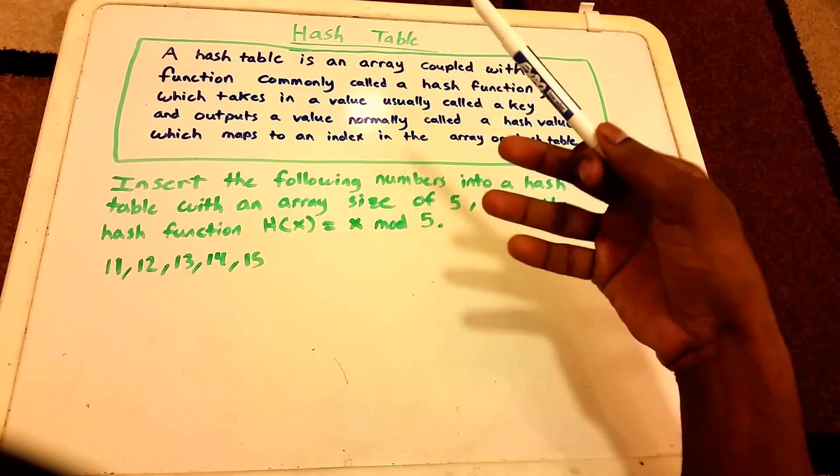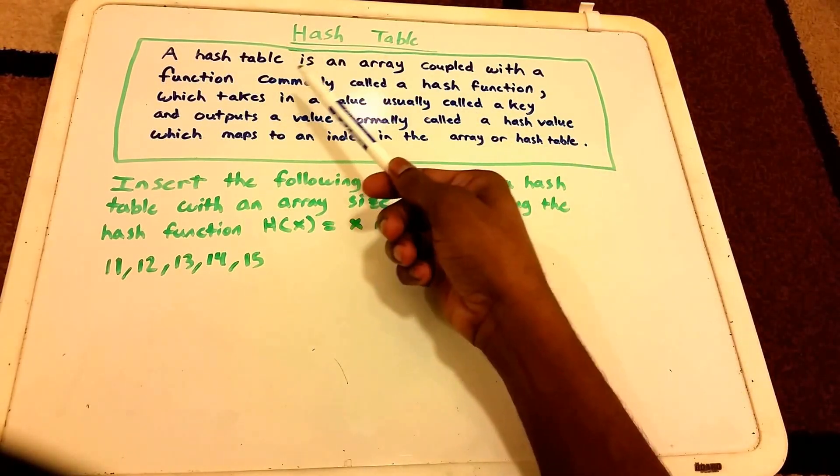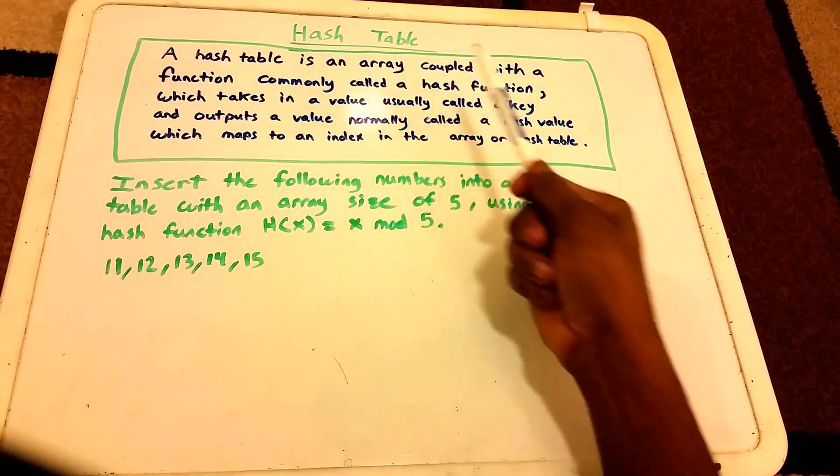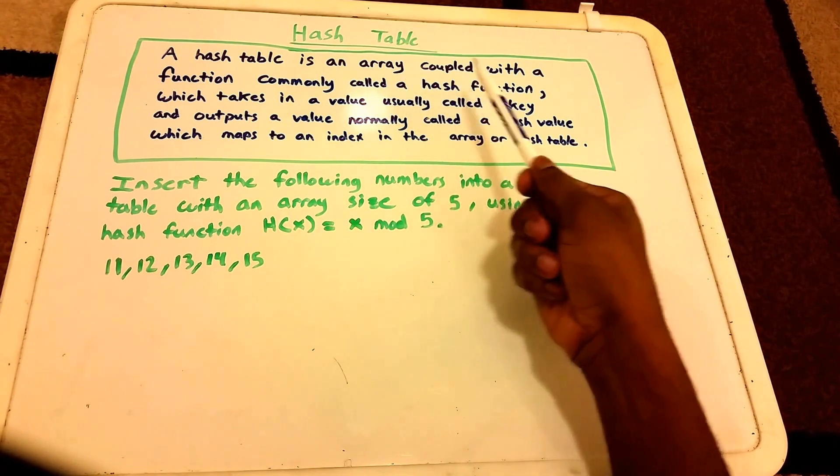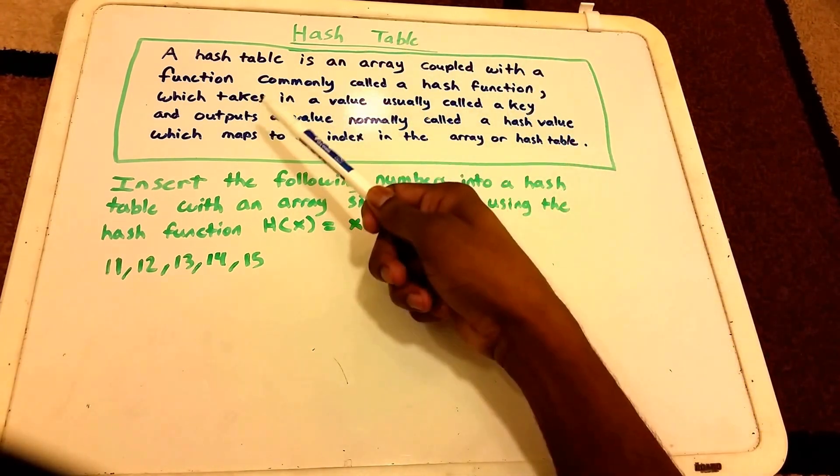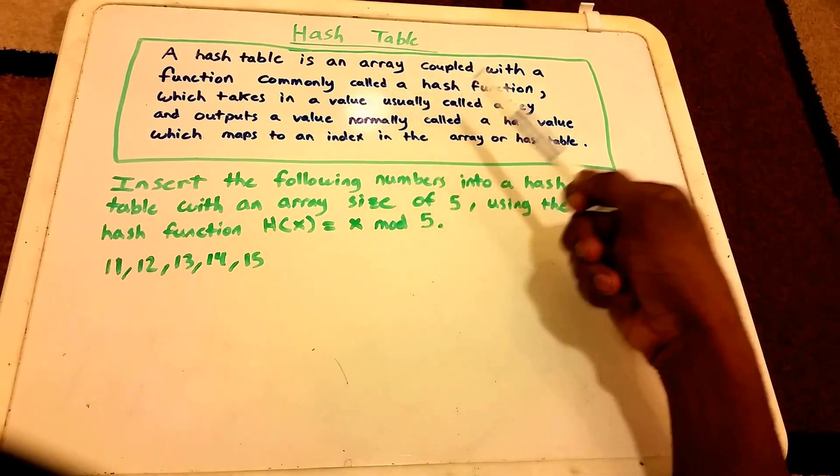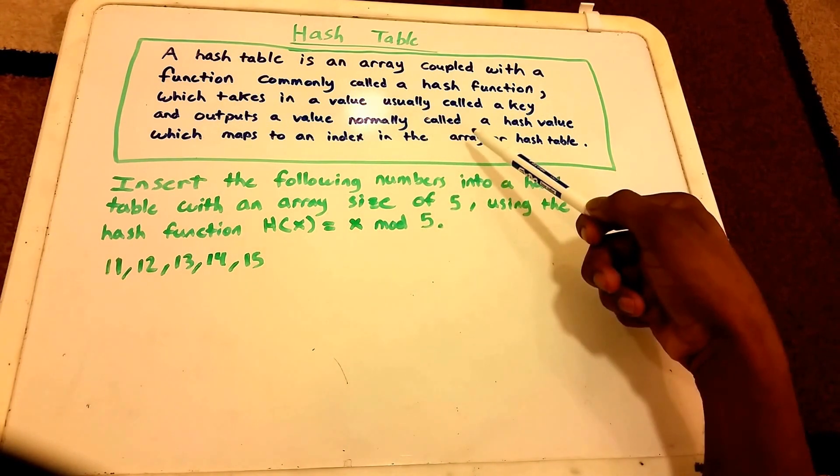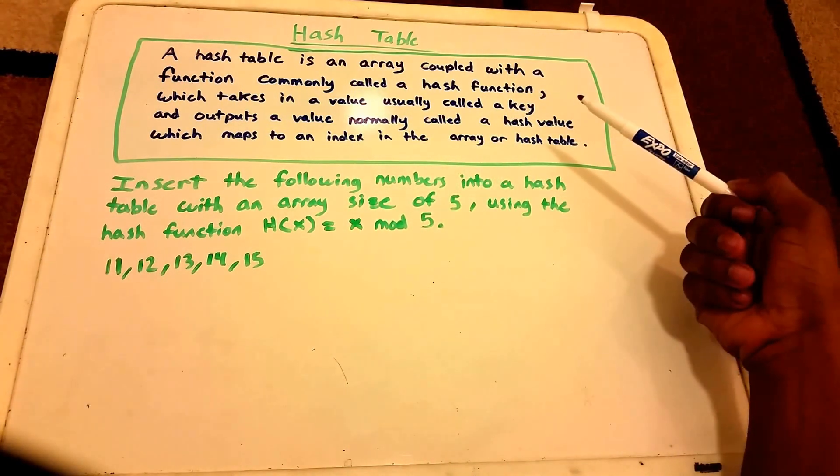Hey guys, in this video we're going to talk about hash tables. A hash table is an array coupled with a function commonly called a hash function, which takes in a value usually called a key and outputs a value normally called a hash value. That hash value maps to an index in the array, also known as the hash table.